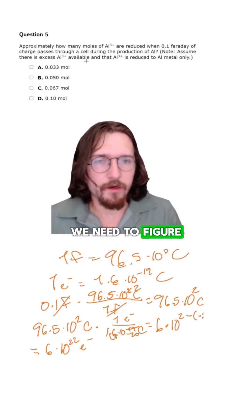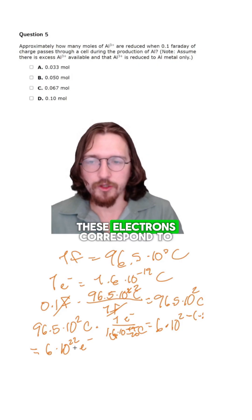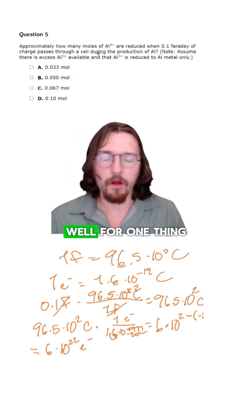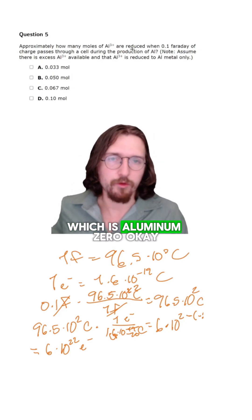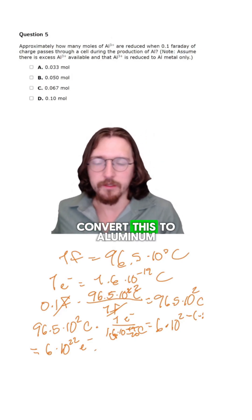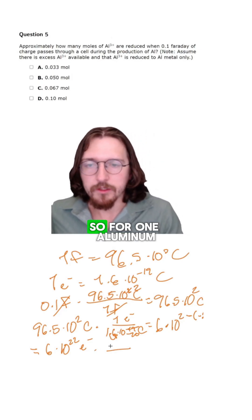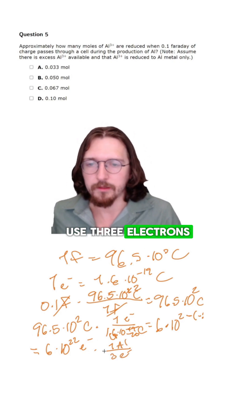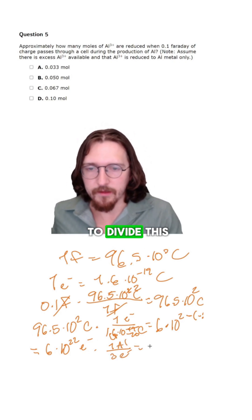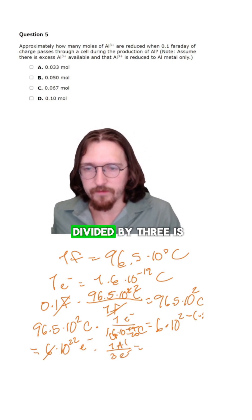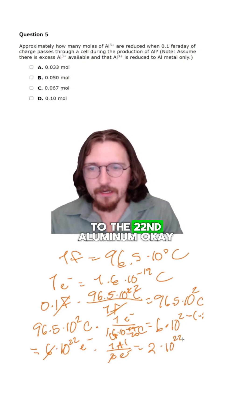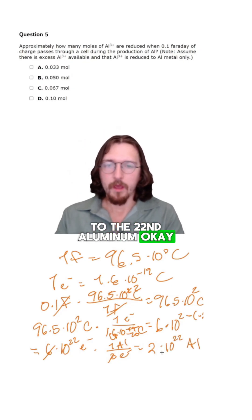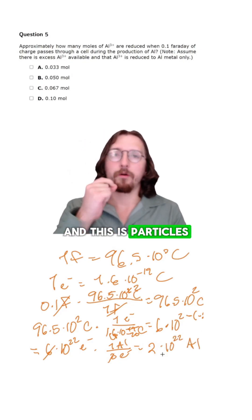Now we need to figure out how many of these electrons correspond to aluminum. To go from Al 3+ to neutral aluminum (aluminum 0), you use 3 electrons. So to convert to aluminum metal, for one aluminum atom we use 3 electrons. We just divide: 6 divided by 3 is 2, so it's going to be 2 times 10 to the 22nd aluminum particles.